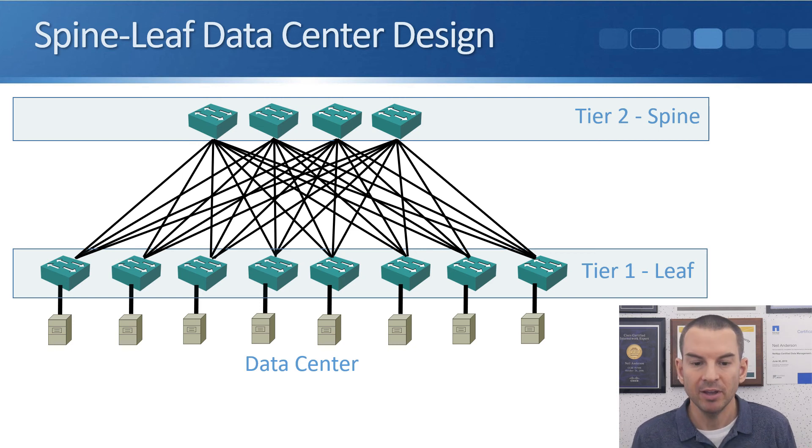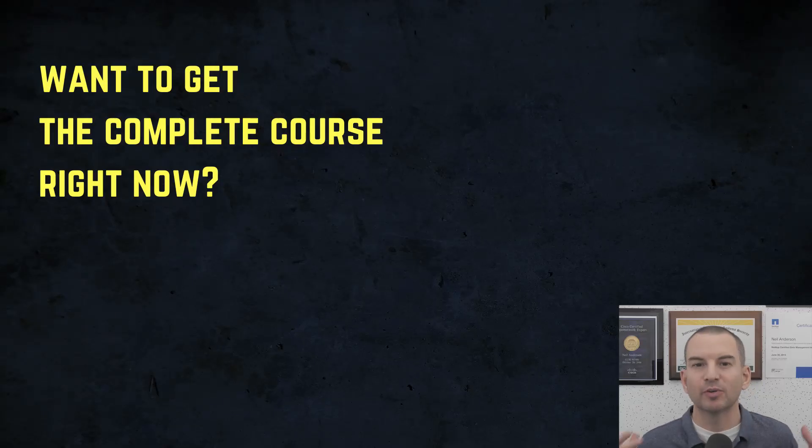It still works well, we are still going to have north and southbound traffic here as well, but it does give us those gains where we've got that additional east and west traffic. That's everything I needed to tell you about the spine leaf data center network design. I'll see you in the next lecture where we're going to be back onto our main campus networks, which are the main focus of the CCNA exam. We'll start getting into detail on our VLANs. Thanks for watching.